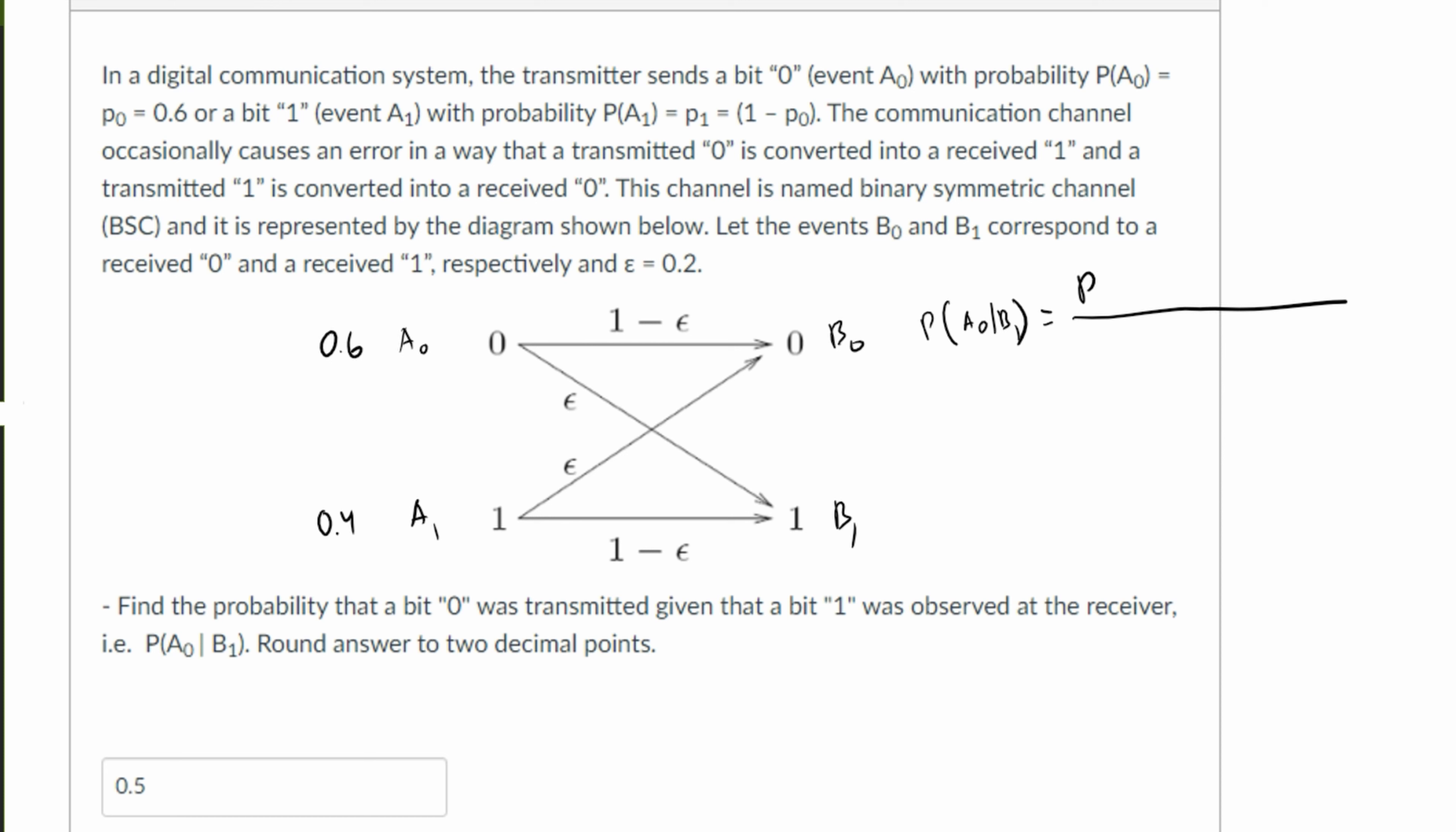There's one more thing. We're going to have the probability of A0 given B1, and then the probability of A0 actually being sent. This is all divided by the probability of B1. These are the equations we're going to be using.